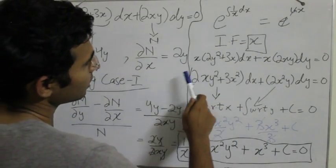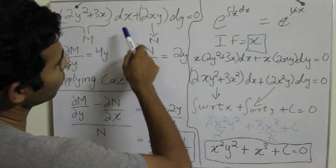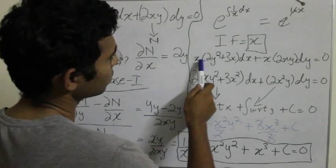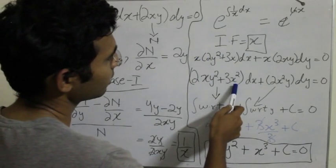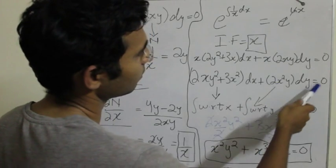I multiply x with this entire equation and to make it into an equation that can be solved by exact method. So I get 2xy squared plus 3x squared dx plus 2x squared y dy.